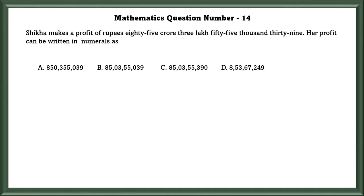Mathematics Question Number 14: Shikha makes a profit of Rs. 85,355,039. Her profits can be written in the numerals as B.